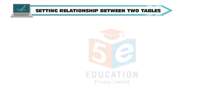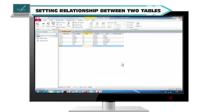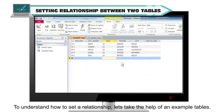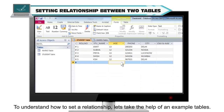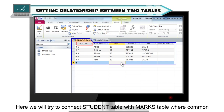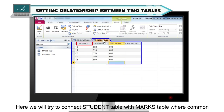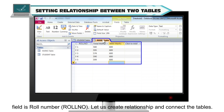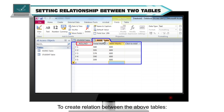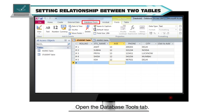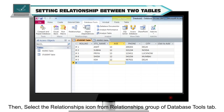Setting relationship between two tables. To understand how to set a relationship, let's take the help of example tables. Here, we will try to connect the student table with the marks table, where the common field is role number. To create a relation between the tables, open the Database Tools tab, then select the Relationships icon from the Relationships group.